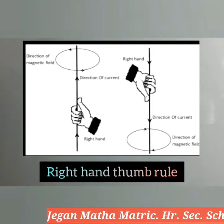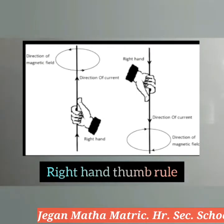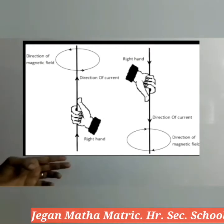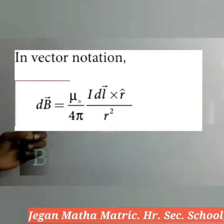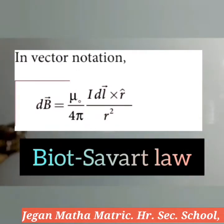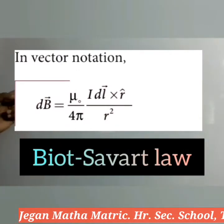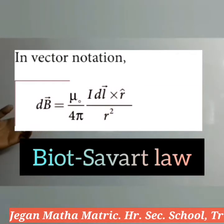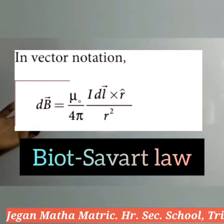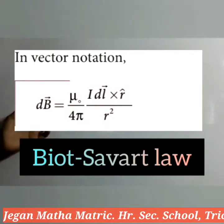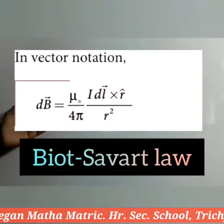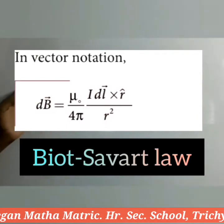At the end of this video, we are going to discuss the right-hand thumb rule. The third topic is the Biot-Savart law, which is used to find the magnitude of the magnetic field at a particular point due to a current-carrying conductor.